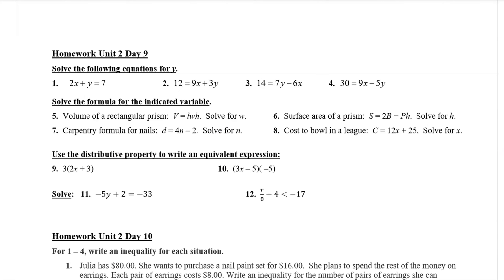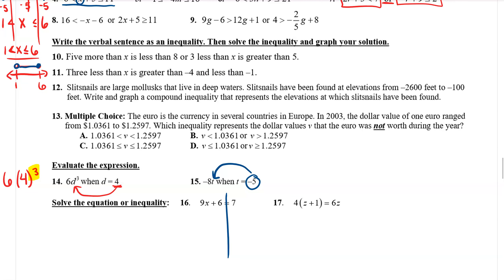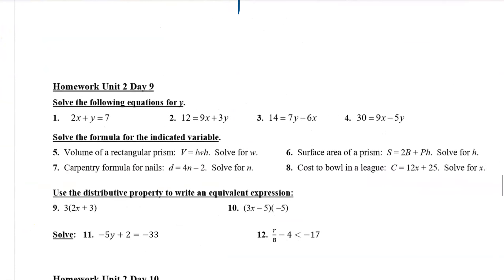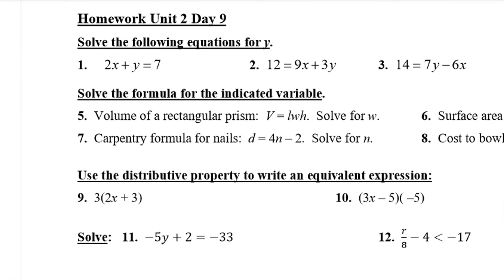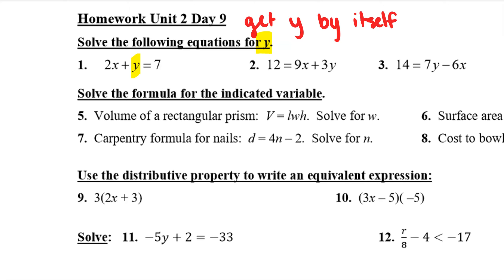So now I'm going to do some hints on day nine. Finish up all the problems on day eight and I'll do a couple of the problems on day nine. I'm going to start with number one — the directions say to solve the following equations for Y. Remember that means get Y by itself. So I want to get Y by itself, which means I need to move some other things away. I need to move away anything that's on the same side as the Y. I want to get the Y by itself. The only thing I need to move is the 2x.